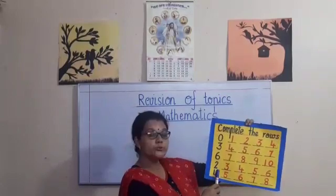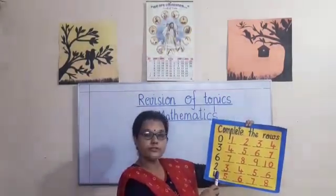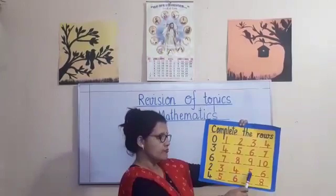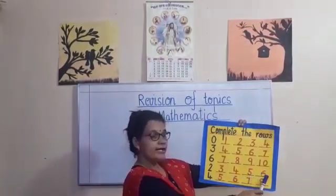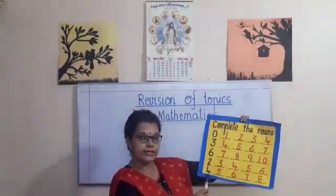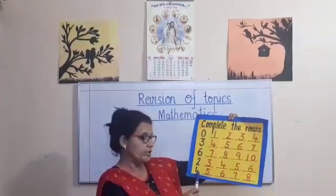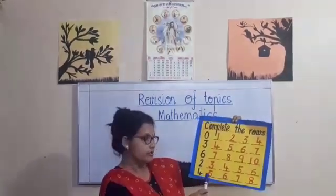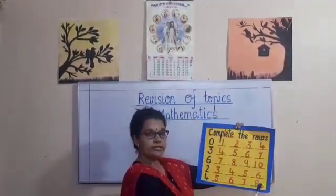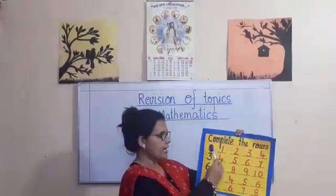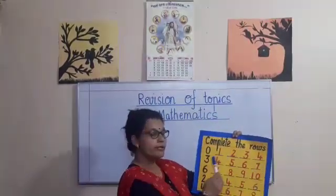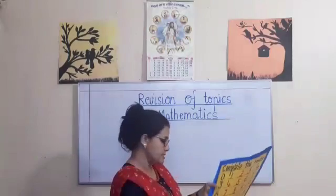The next number here is 2. What comes after 2? 3, 4, 5 and 6. Which number is this children? Number 4. What comes after 4? 5, 6, 7, 8. After you do all these lines, you have to go through them and find out if there are any mistakes.